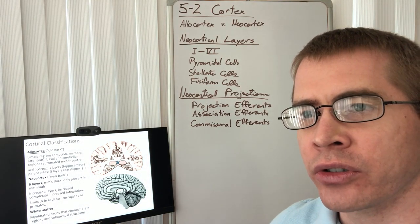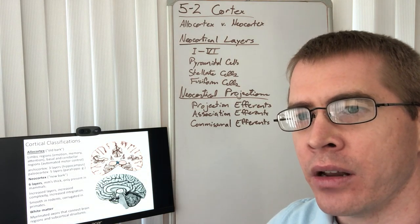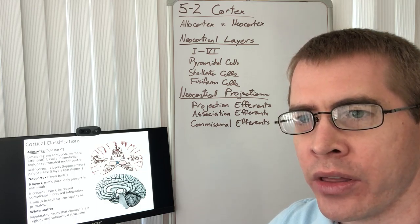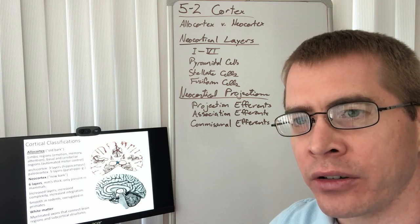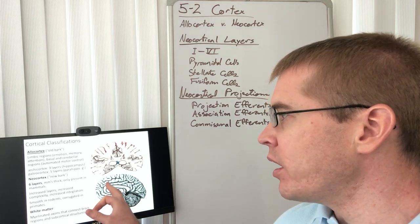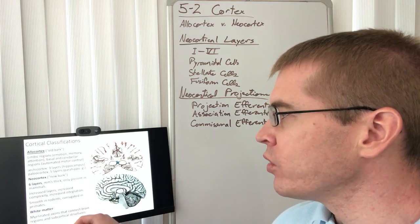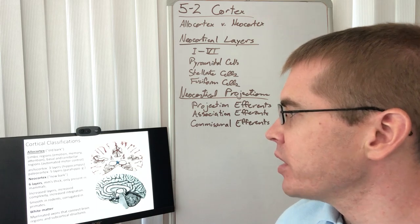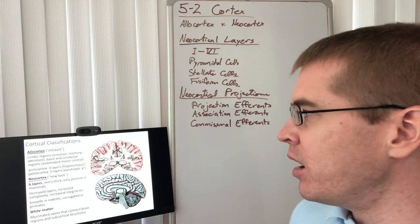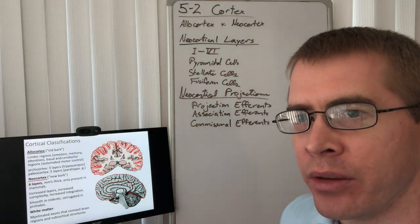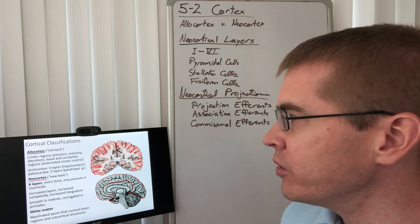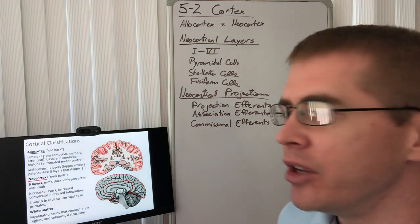These older cortical structures are different in that they have only three, maybe five layers within them, whereas neocortical structures have six specific layers. The neocortex is thicker because of that, and it makes up all of the rest of the cortex shown here in red — the primary somatomotor, somatosensory, frontal — all of those are part of the neocortex.